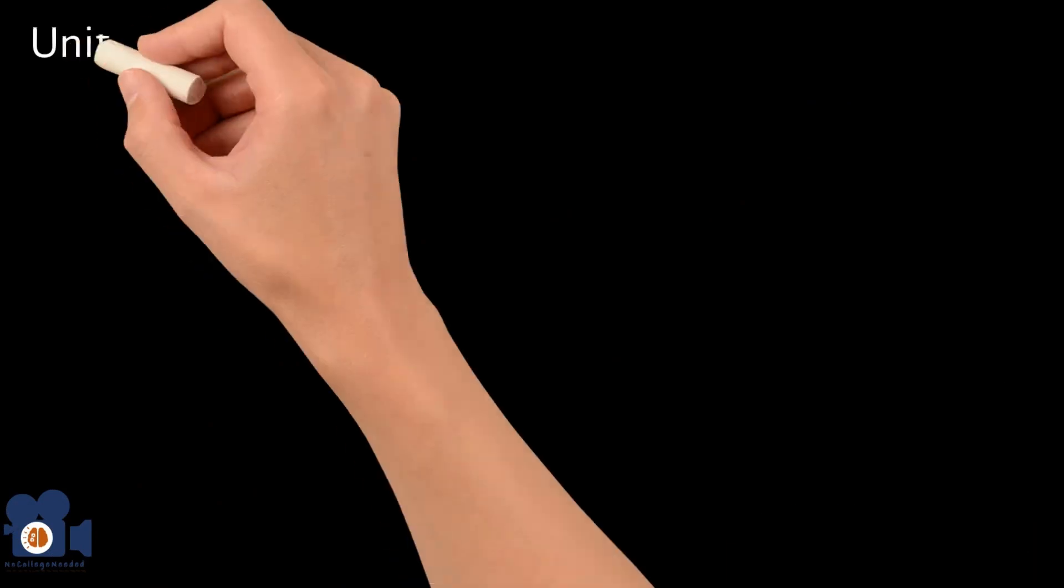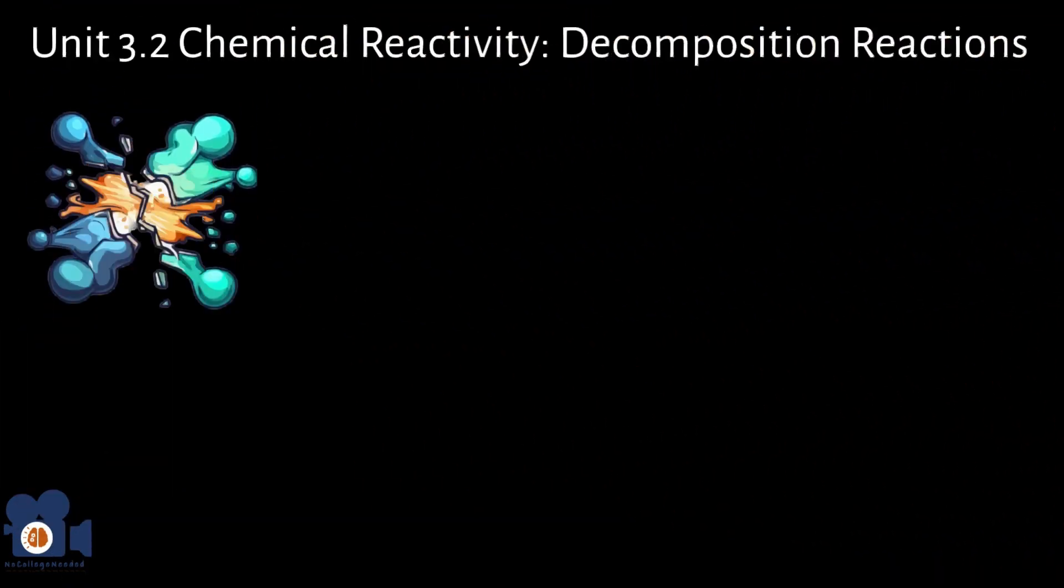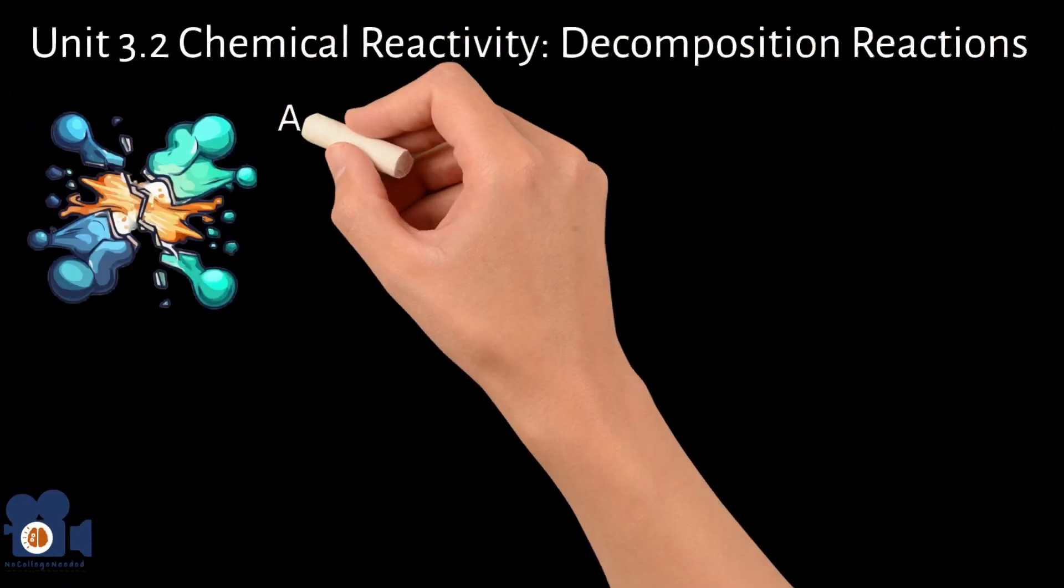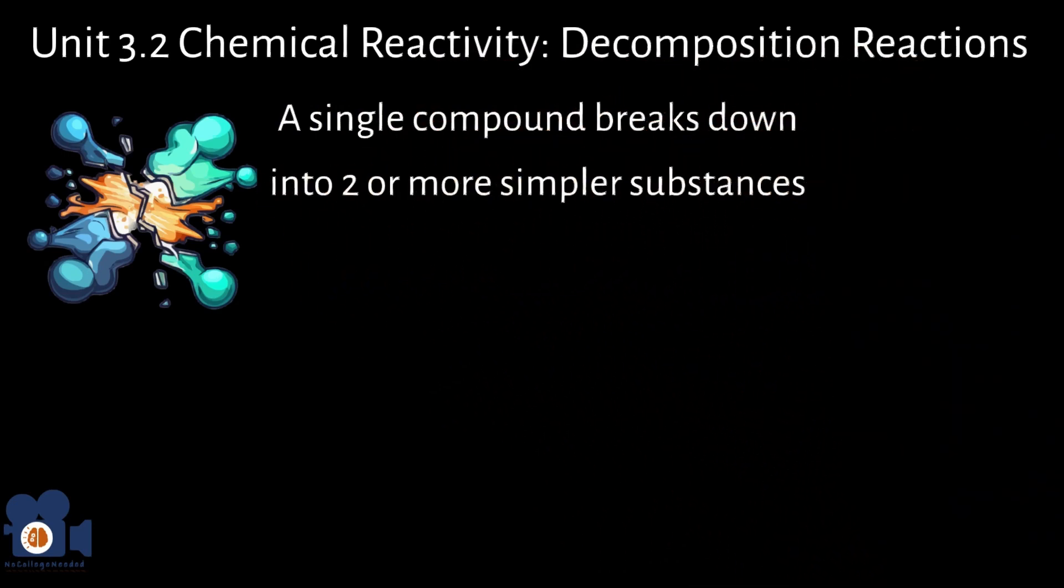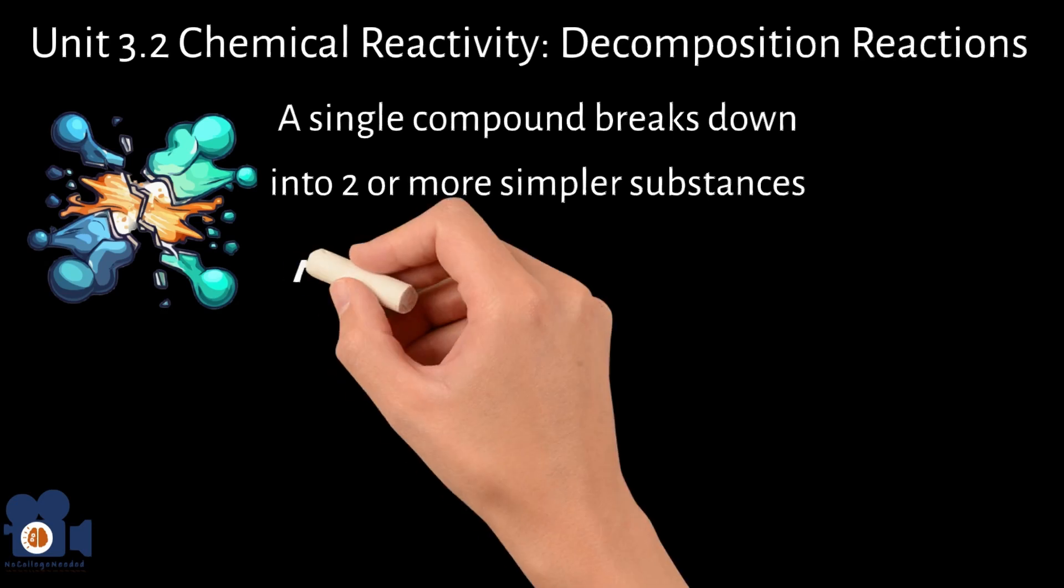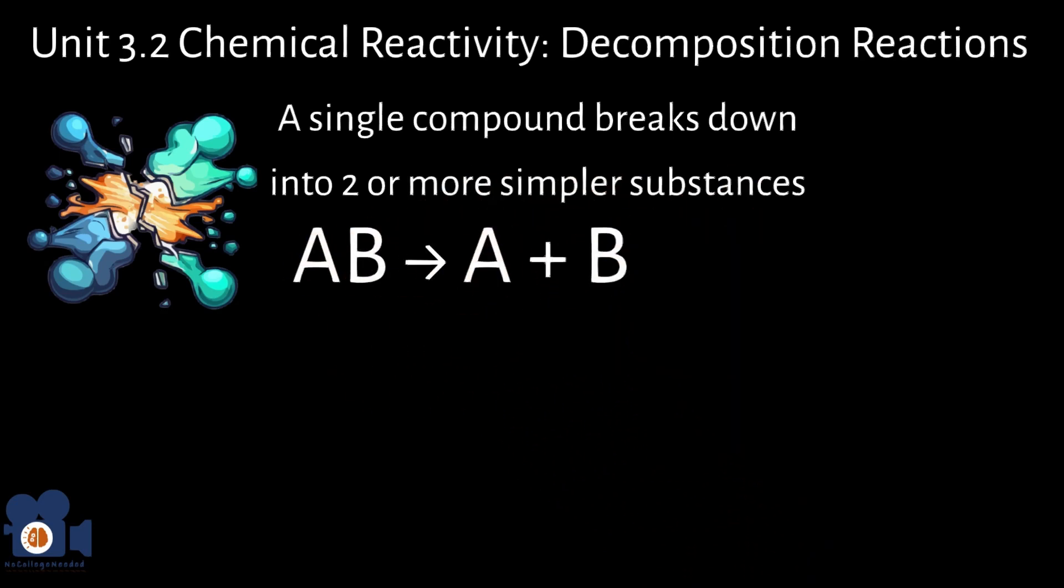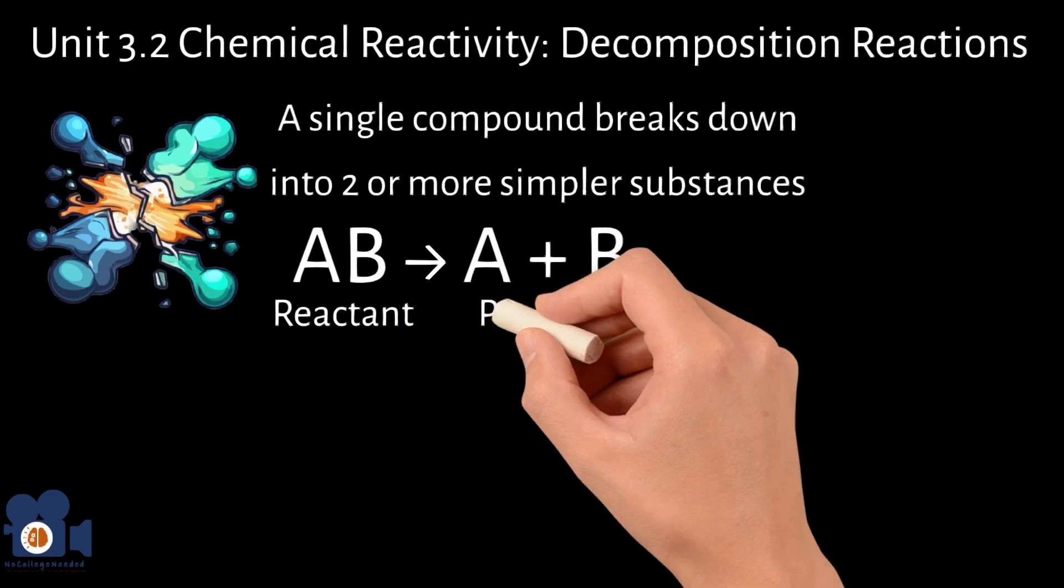Decomposition reactions are the opposite of combination reactions and are a type of chemical reaction in which a single compound breaks down into two or more simpler substances. The general equation for a decomposition reaction is AB going to A plus B. In this equation, AB represents the reactant, and A and B represent the products.